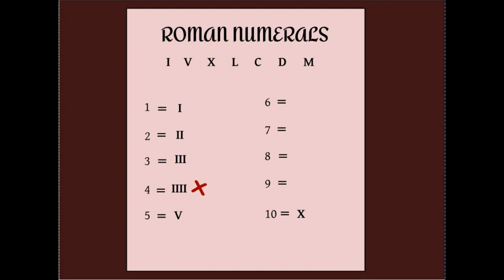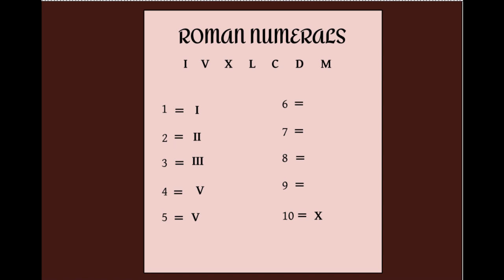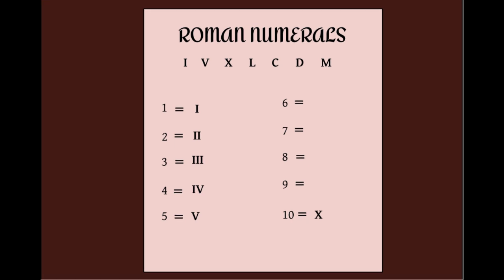So, what do we do now? Rule number three. Smaller symbol before larger symbol and subtraction. Okay, let's see. So, for four, if we took the symbol for five, which is V, and we put an I in front of it, it means subtracting the value of one from five, which is four. Correct.